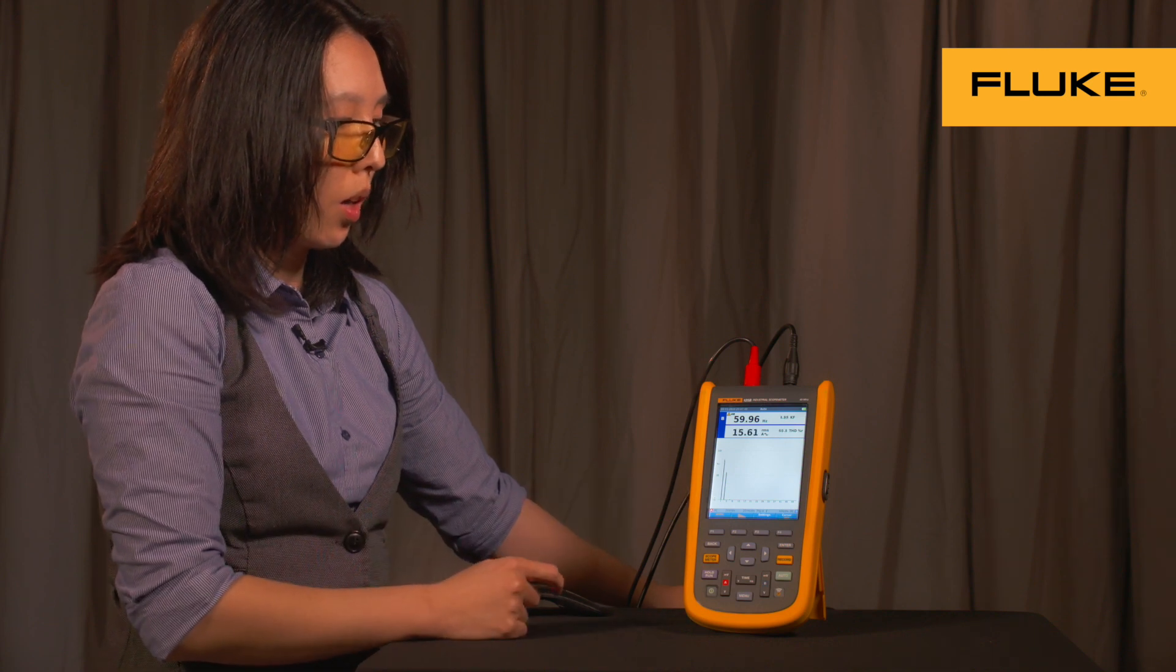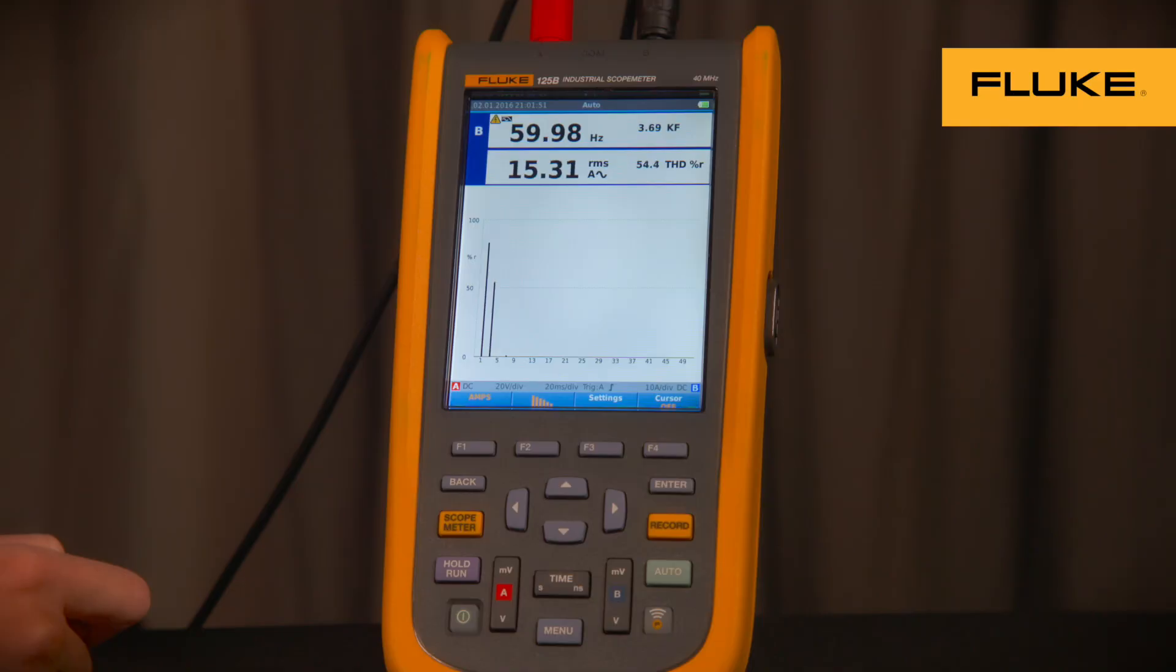And now let's improve our power factor and watch our third harmonic bar decrease. That's all we've got for power and harmonics mode for the 125b scope meter. Thanks for listening.